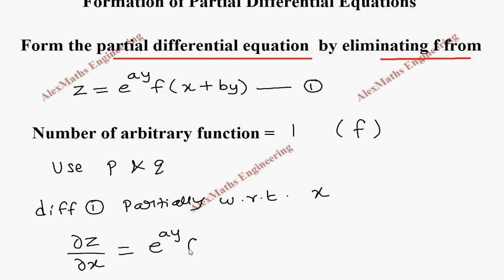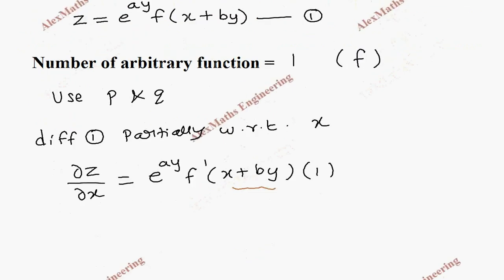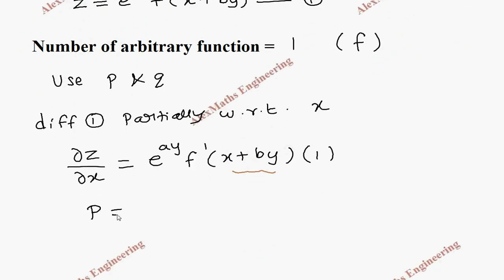And f derivative is f', the inner function should be written as it is. Using the chain rule we have to differentiate this inner function. The x derivative is 1 and the other term is 0 because y is constant.